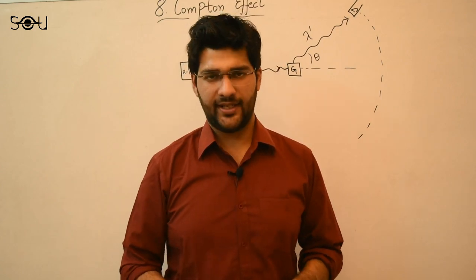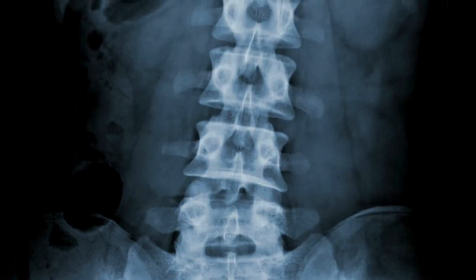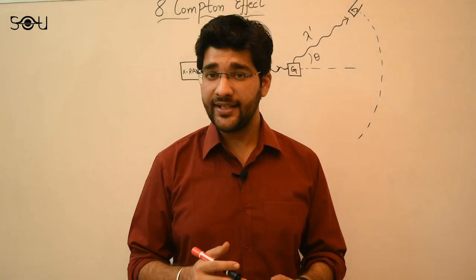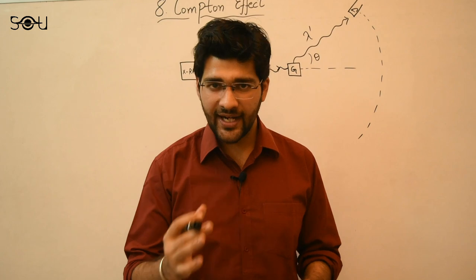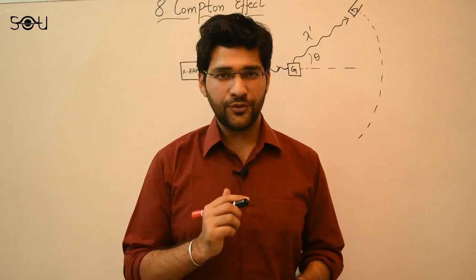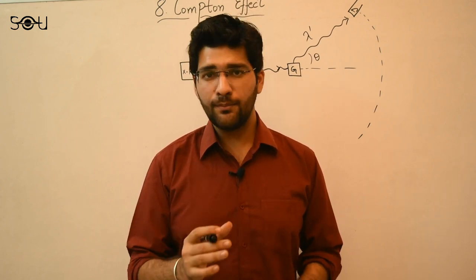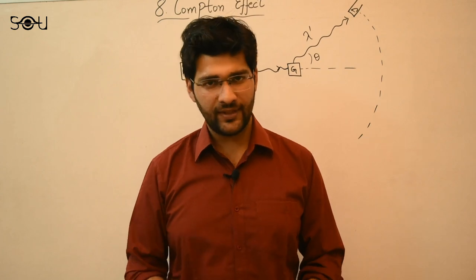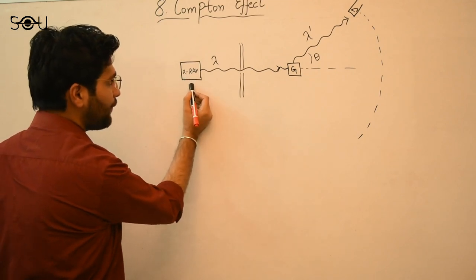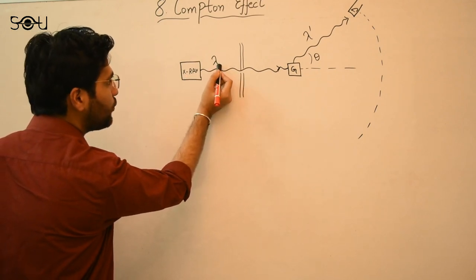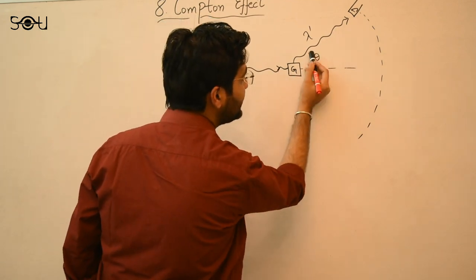X-rays were first discovered in 1895, and in the first quarter of the 20th century — from 1900 to 1925 — research on how x-rays interact with matter was well underway. In 1923, Arthur Compton observed something now considered the most conclusive evidence of the particle nature of light. The setup of the Compton experiment is as follows: we have a source emitting monochromatic x-rays at wavelength λ, which hit a piece of graphite and are scattered off at an angle θ.